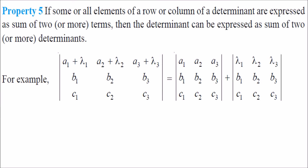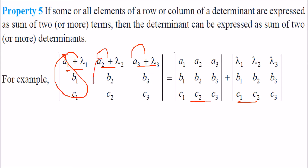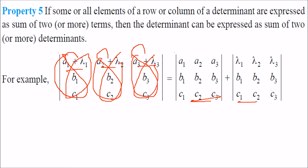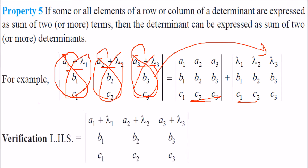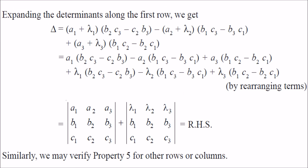Property 5: if all elements of a row or column of a determinant are expressed as a sum of two or more terms — for example, a1 + λ1, a2 + λ2, a3 + λ3 — then the determinant can be expressed as the sum of two or more determinants. We can write it as the addition of two different determinants: one taking a1, a2, a3 and the other taking λ1, λ2, λ3, with the remaining rows unchanged. You can verify that both approaches give the same result.